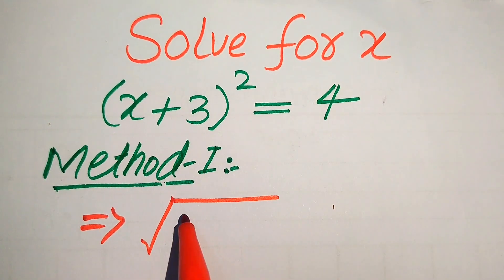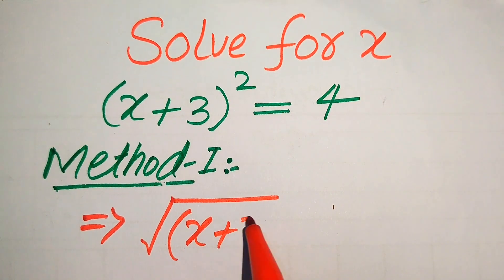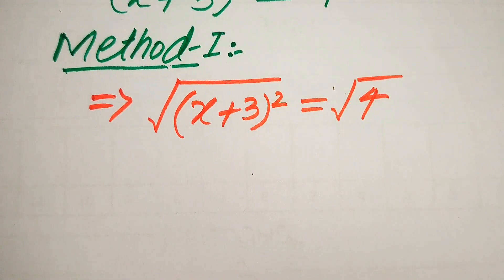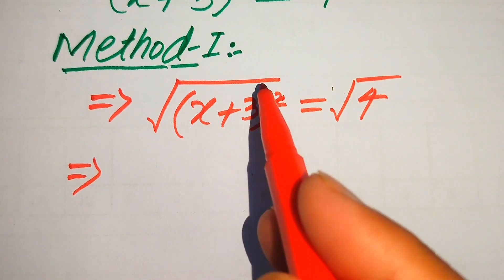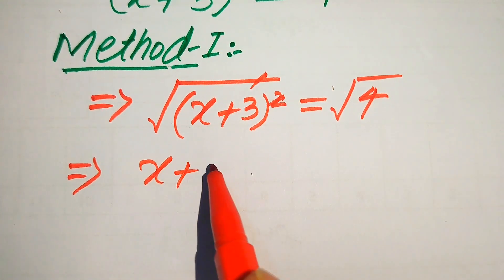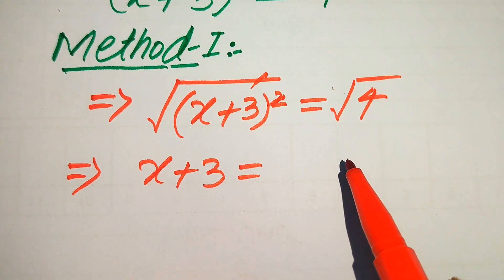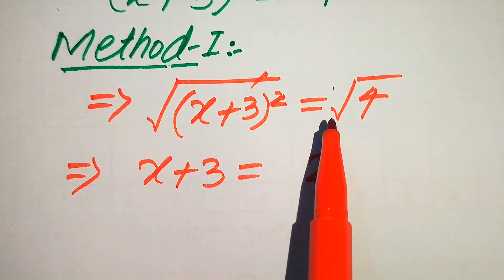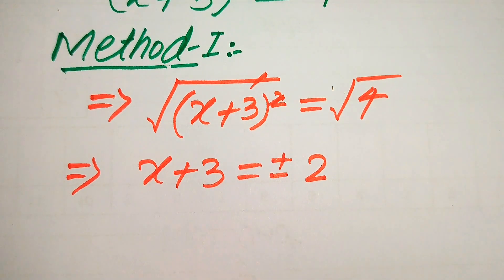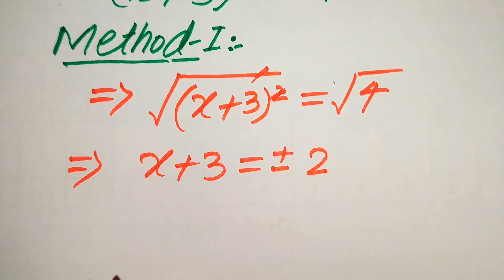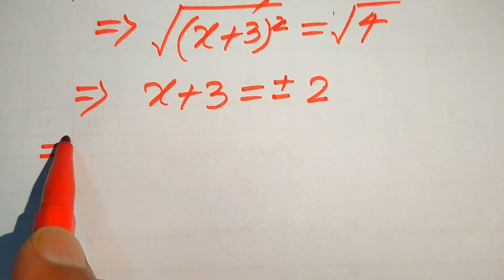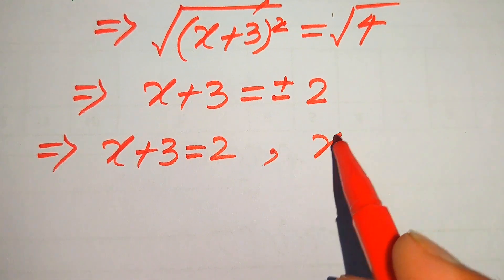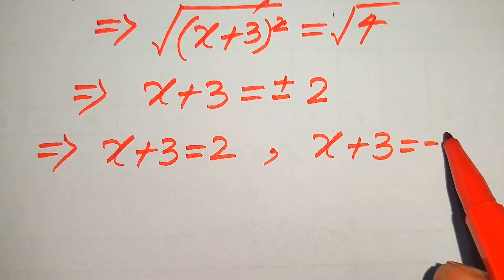After applying the square root on both sides, it will be written as √((x + 3)²) = √4. The square and square root cancel, and we get x + 3 = ±2. We write the plus-minus sign on the right-hand side and break this into two cases: Case 1: x + 3 = +2, and Case 2: x + 3 = −2.